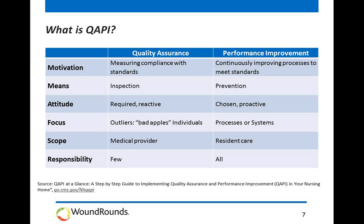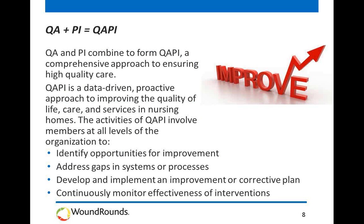The information on this slide about what QAPI is and how it differs from quality assurance will be on your post-test. Historically, our QA programs looked at compliance with standards through inspection — it was a rear-view mirror. We were more reactive in our approach, and many people felt that responsibility fell on a few key members on the QA team. QAPI is different in that it focuses on preventing adverse events through continuous quality improvement. The focus is on process and systems, not individuals, and everyone within an organization is part of the QAPI process.